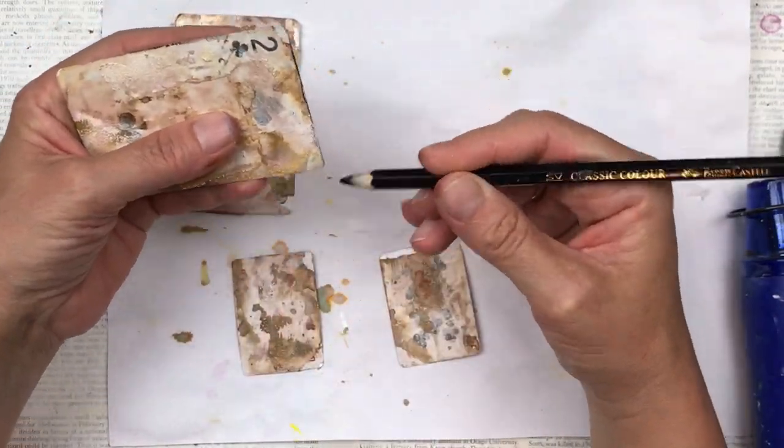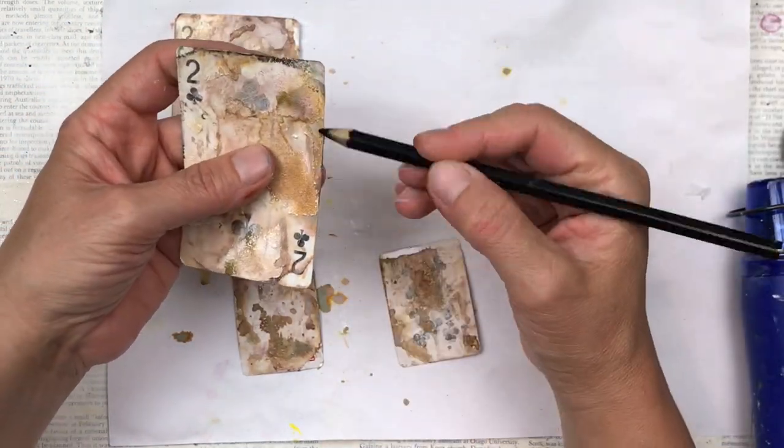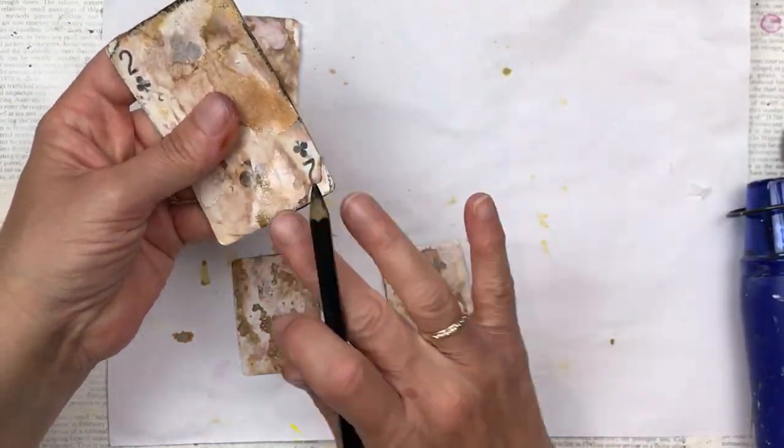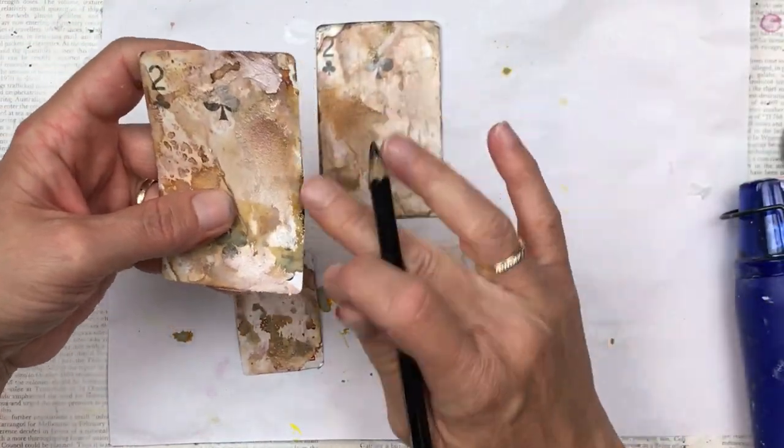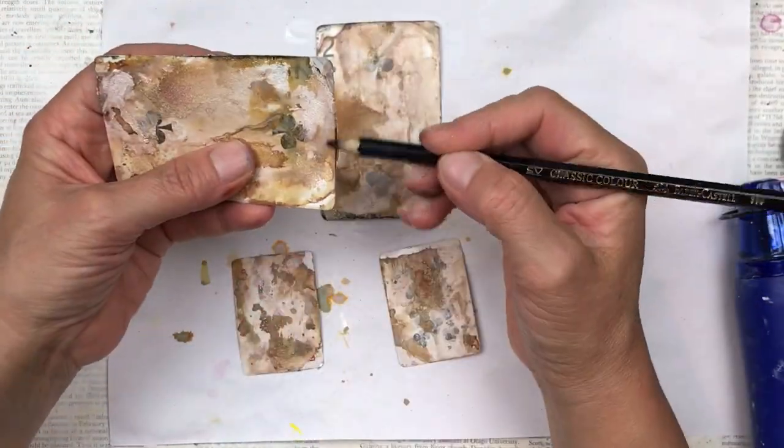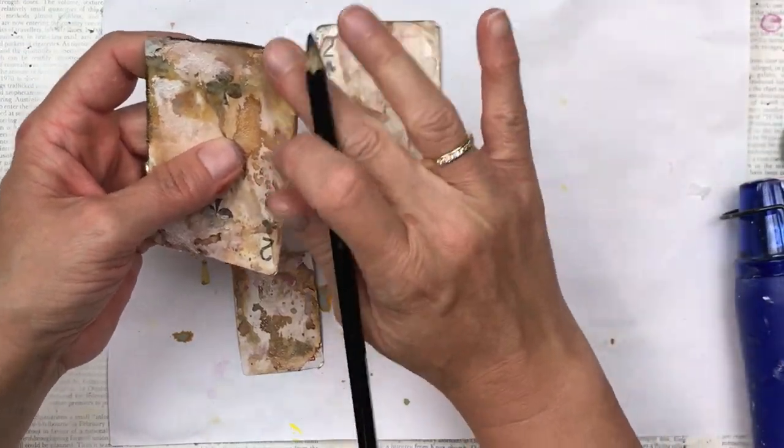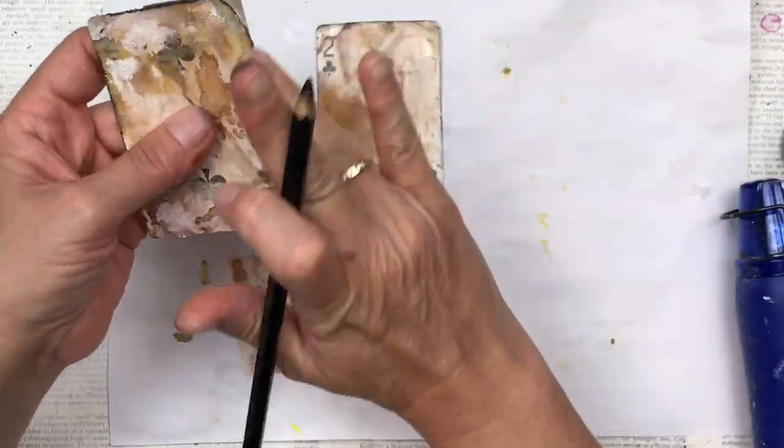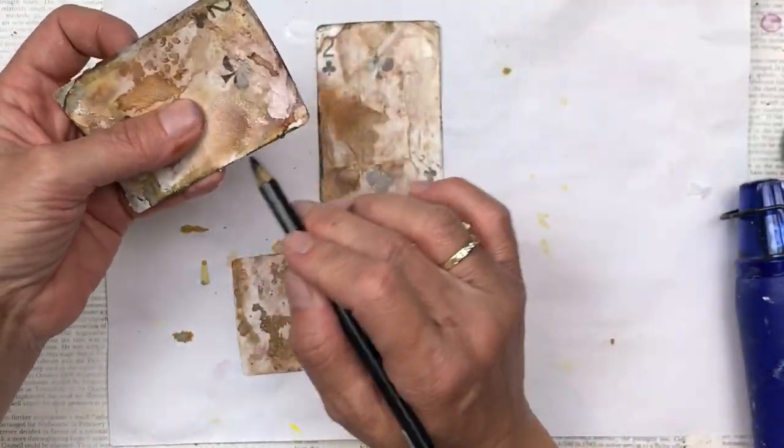I'm adding some contrast by using a black watercolor pencil. I dip the point of the pencil in some water and then I go around the edge of the card. As I go, I also smudge with my finger to blend it in a little bit. I don't want a definite dark line. I want more of like a shadow.